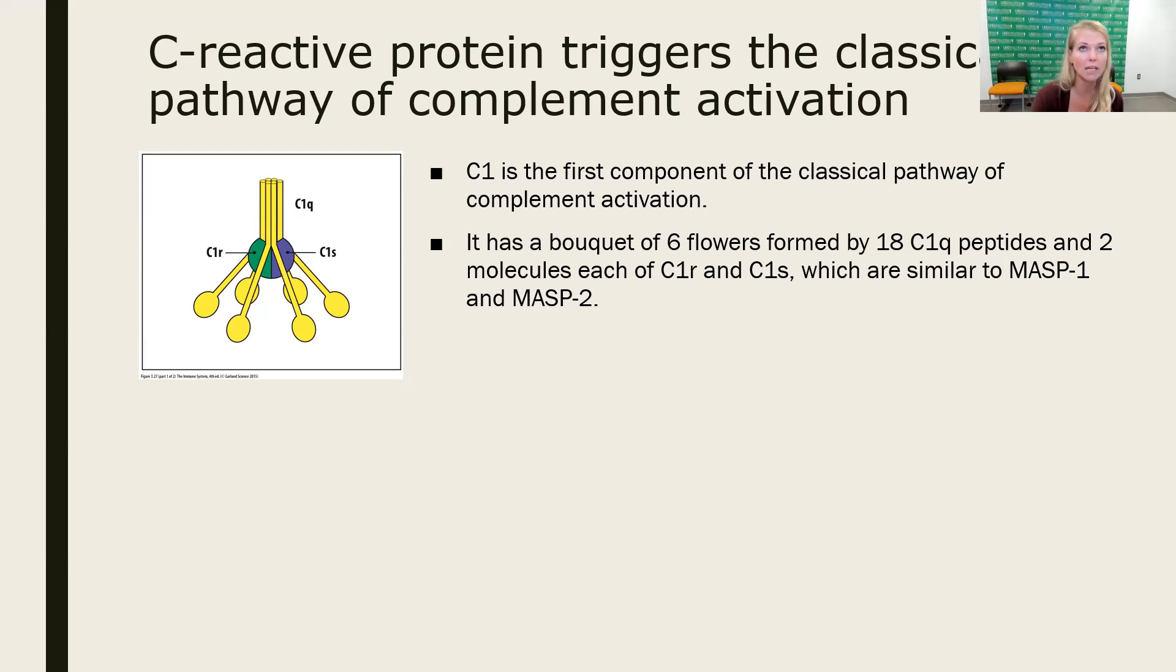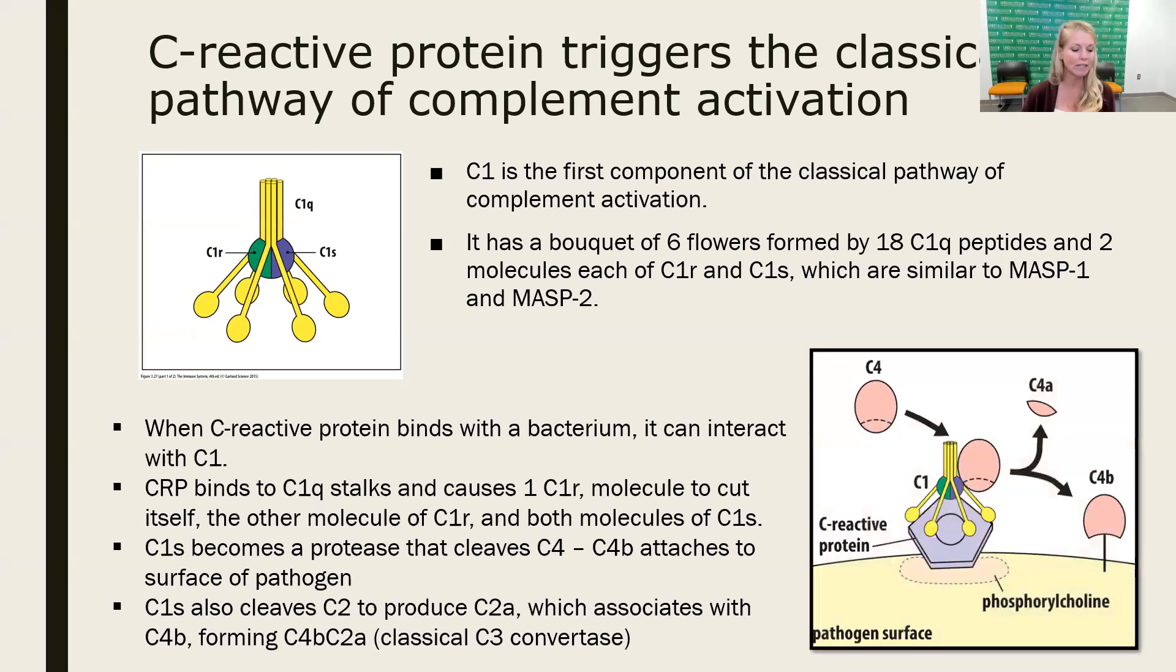C-reactive protein is going to interact with a pathogen surface. It's going to bind to the bacterium and it can interact with complement protein one, which will then cause the C1Q stalk to cause one of those molecules of C1R to cut itself. Then it's going to go ahead and cut both of the C1Ss, making them serine proteases. C1S then becomes a protease that cleaves C4.